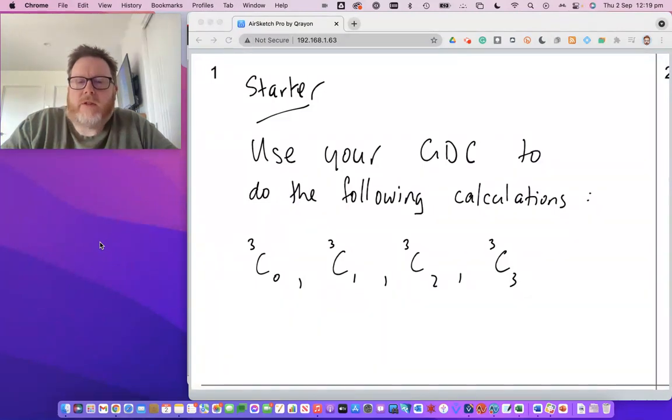So you can see here I've given you four calculations: 3C0, 3C1, 3C2 and 3C3. I want you to use your GDC to plug those values in and see what numbers you get out. So pause the video and then do that activity, then come back.